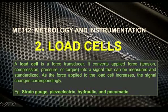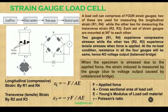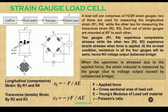In a strain gauge load cell, force is applied on an elastic member, and a strain gauge is attached to that elastic member. The strain happening on the elastic member is transferred to the strain gauge. When the strain gauge is part of a Wheatstone bridge, there will be an imbalance of the Wheatstone bridge, which causes an electrical signal. So the applied force is converted to an electrical signal in the case of the strain gauge load cell.